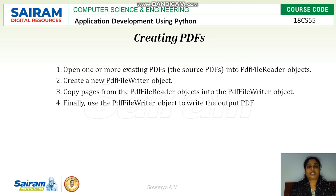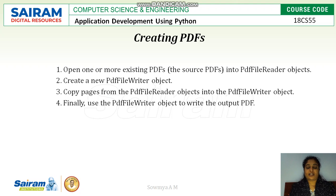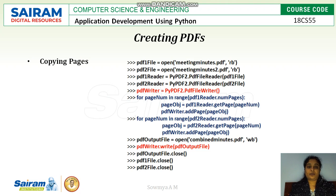The next topic is creating a PDF from Python. To do that, we open one or more existing PDFs as the source for a PDF reader object, then create a new PDF writer object, copy the pages from the PDF reader object to the writer object, and save the file. Finally, use the PDF writer to write the object to the output PDF.